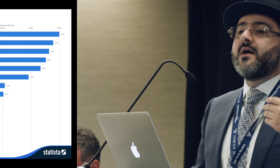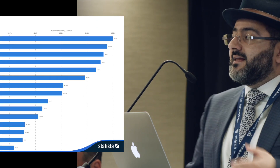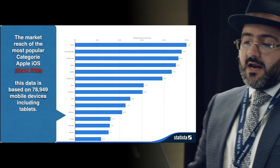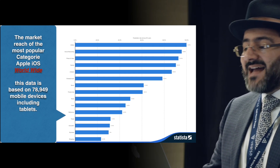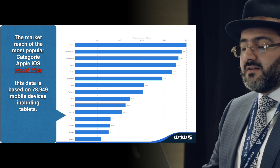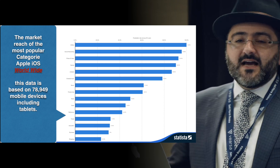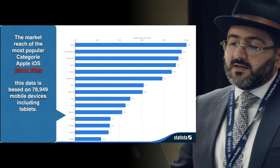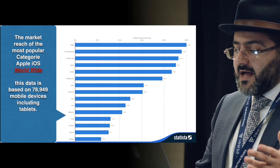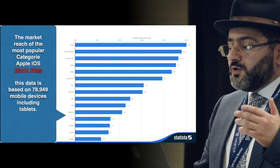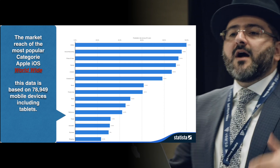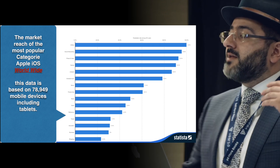Those other means are not found in the app store. The market reach of the most popular categories in Apple iOS worldwide — based on data from 78,949 mobile devices including tablets — shows utilities, social networking, photo and video, games, lifestyle, entertainment, music, productivity, news, book, and reference. We want to focus on news, book, and reference because that relates to the literary content market.